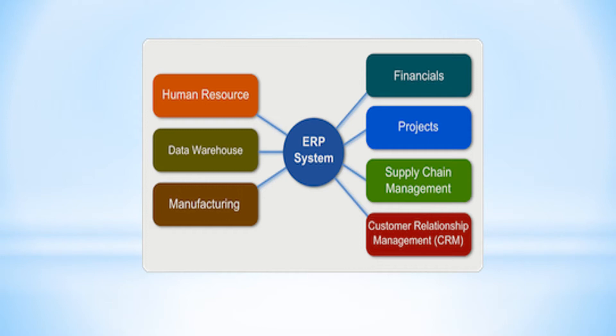Now going with one more module: the ERP system consists of human resources, HR data warehouse — where all the data is connected — manufacturing, financial, projects, supply chain management, and customer relationship management. All these are related to the making of an ERP system.